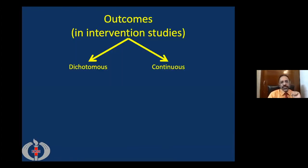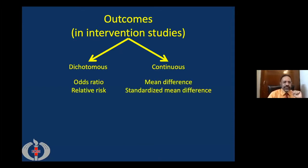In intervention studies, there can be two types of outcome: dichotomous and continuous. Dichotomous outcome is either positive or negative — alive or dead, pregnant or non-pregnant. For these, we use odds ratio or relative risk, and sometimes hazard ratio. When outcomes are continuous — for example, how much has blood pressure reduced by an anti-hypertensive drug — or when we look at reduction in risk, we use mean difference or standardized mean difference.